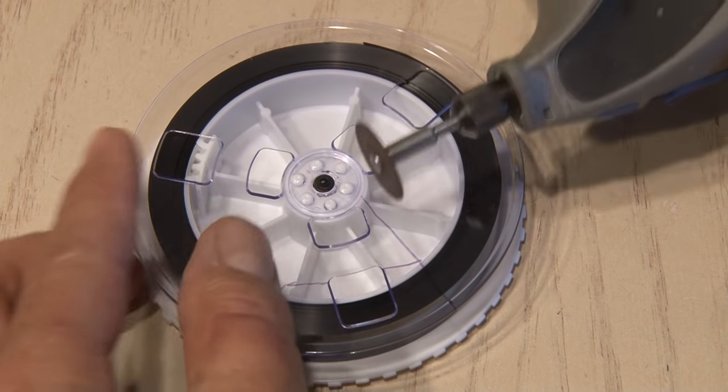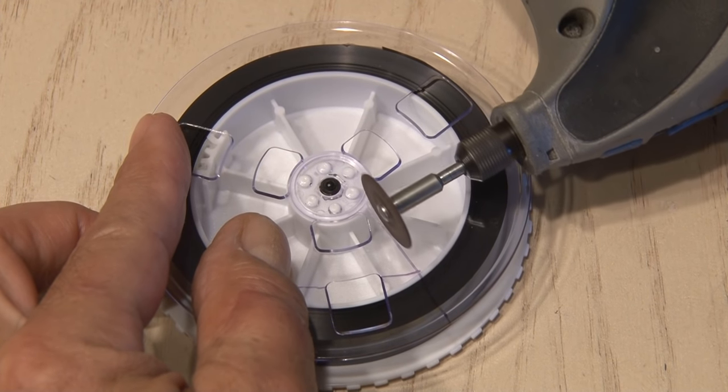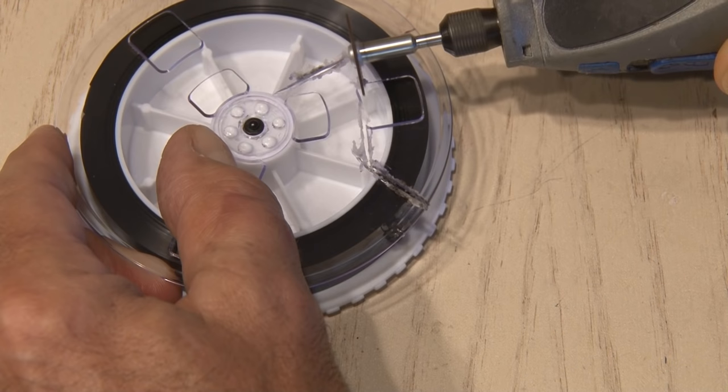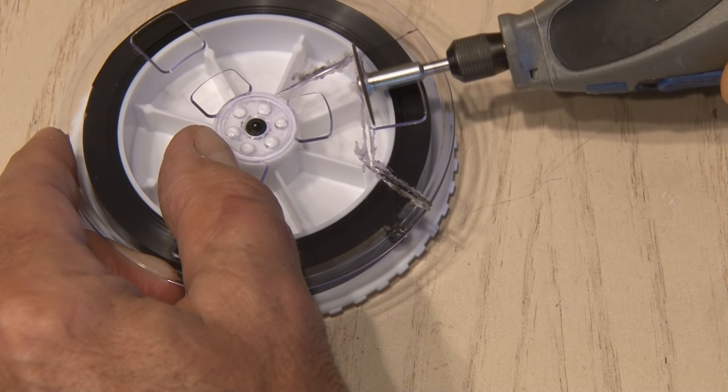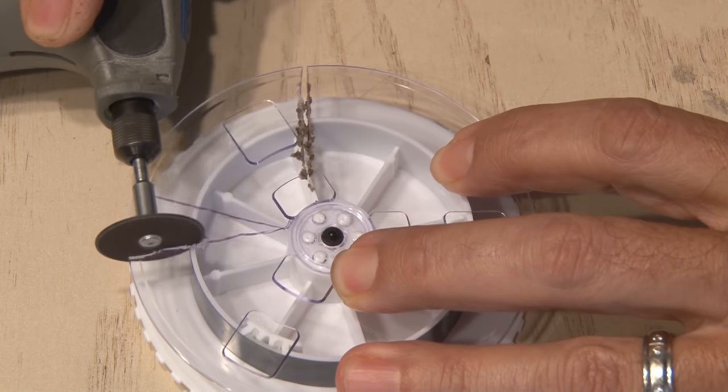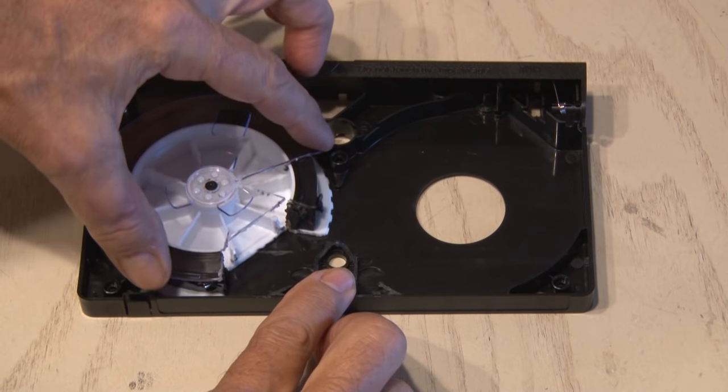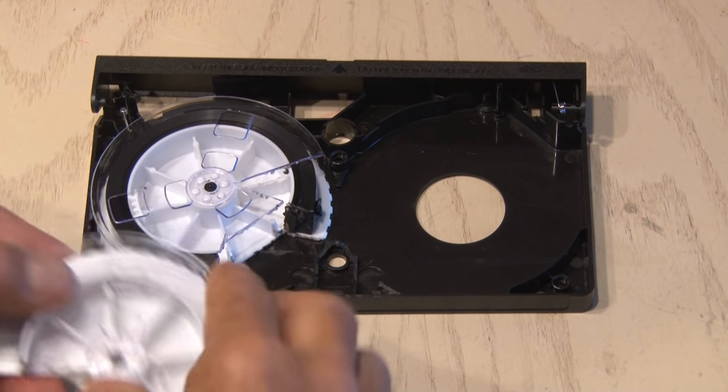Now it's time to make our cuts, so we'll be using our trusty Dremel with a cutting tool on it and cut into that plastic and through the tape. After you've made the cuts on the first reel, it's time to pop the other reel out and go ahead and make the cuts on that one as well. Carefully remove these sections that you've cut out and then place both of those reels back into the case for the next step.